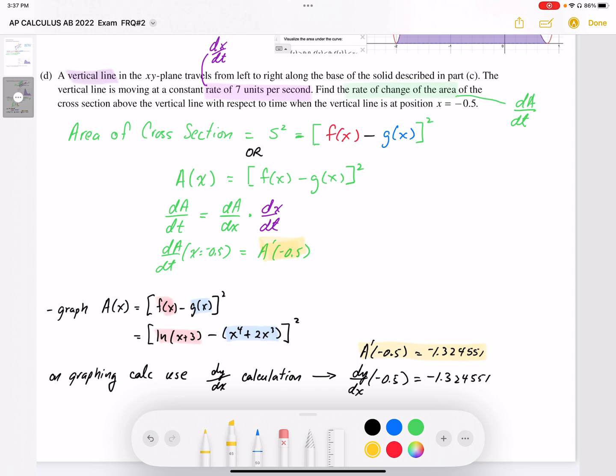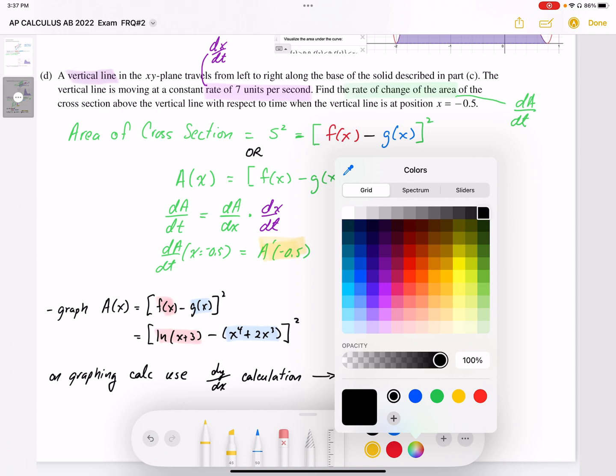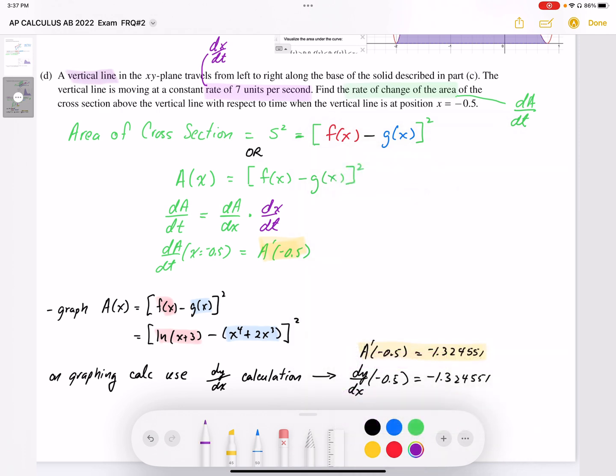That's from my graphing calculator. And then I have been given the dx by dt. So dx by dt is 7 units per second. So times 7.